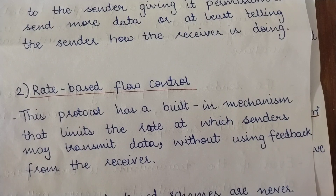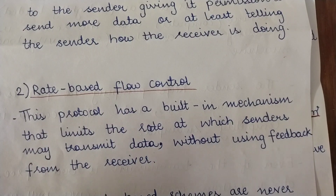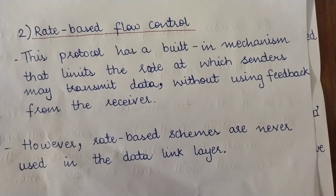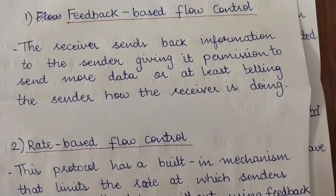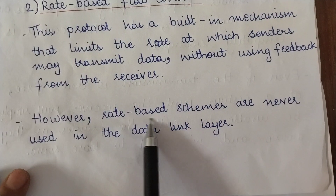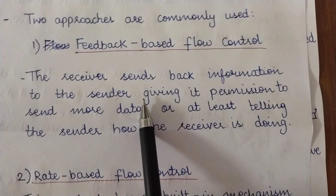In rate-based flow control, you agree upon a particular rate in advance — say two topics per day — and no feedback is required because the rate is pre-determined. However, rate-based schemes are not used at the data link layer. The data link layer is not the only layer responsible for flow control; other layers also handle it. But at the data link layer, rate-based flow control is not used. So the data link layer uses feedback-based flow control.